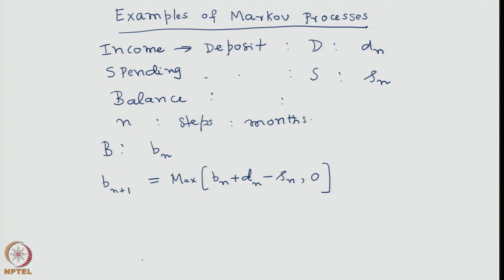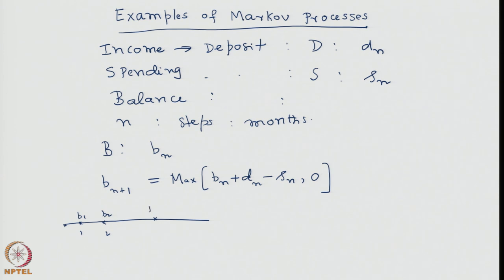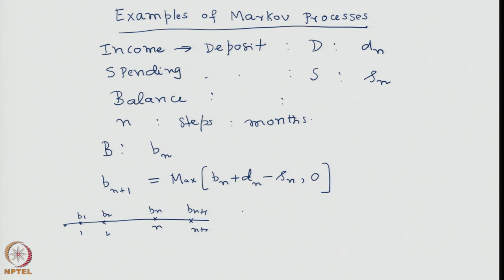One can easily construct, given the fact that the change each month is B_{n+1} - B_n, the transition probability. We are basically now dealing with the transition probability as n proceeds. As n = 1, 2, ... we are talking of bank balances B_1, B_2, and in general B_n, and in the n+1 step, B_{n+1}. So it is a random walk of the quantity B along the money space.